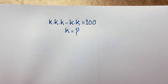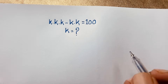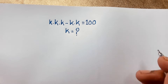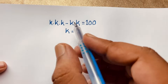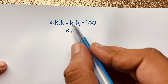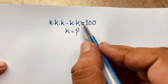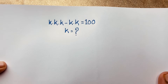Hello everyone, welcome to Russell's Classroom. Today we have solved a nice viral math olympiad question. This question is k times k times k minus k times k is equal to 100. We will find out what is the value of k in this exponential math problem.